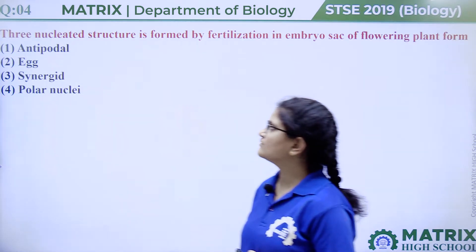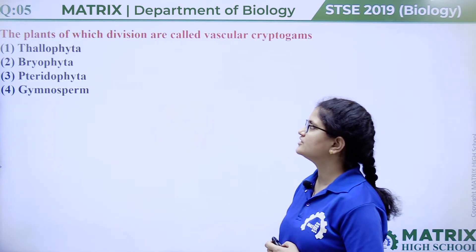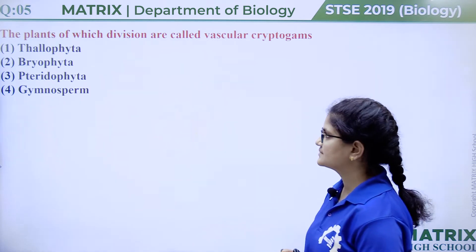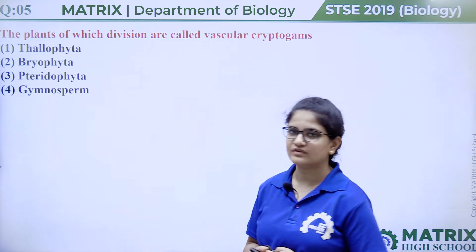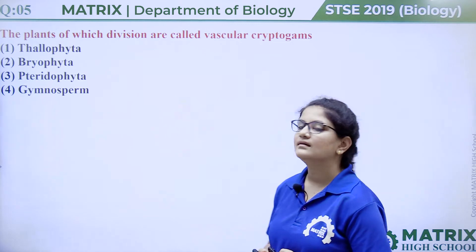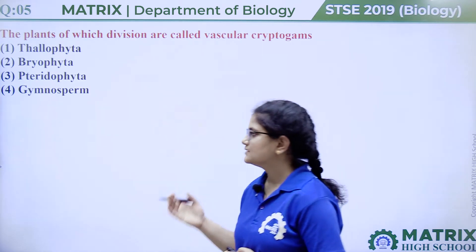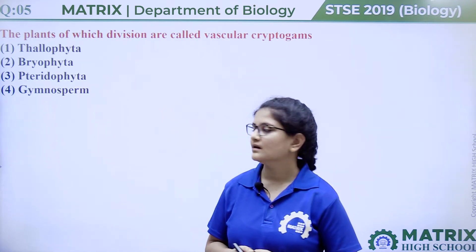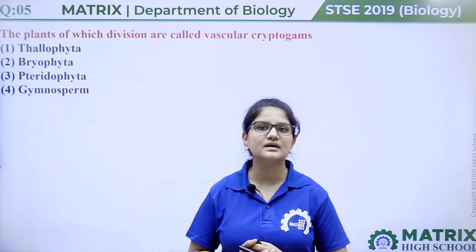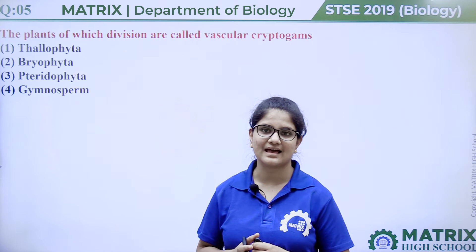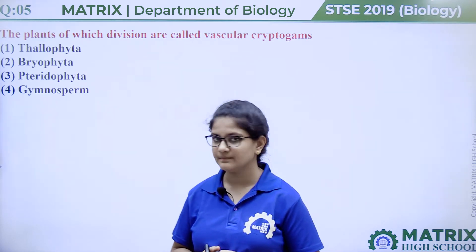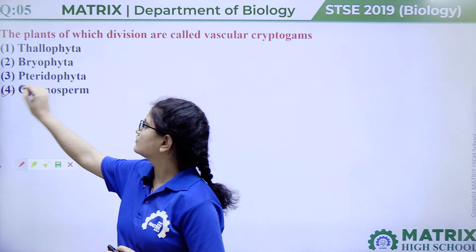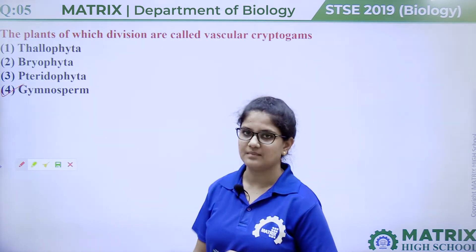Question number five: the plants of which division are called vascular cryptogams? Options are Thallophyta, Bryophyta, Pteridophyta, or Gymnosperms. Cryptogams means seedless plants, and vascular means plants having vascular tissues — xylem and phloem. The answer is option three, Pteridophyta.